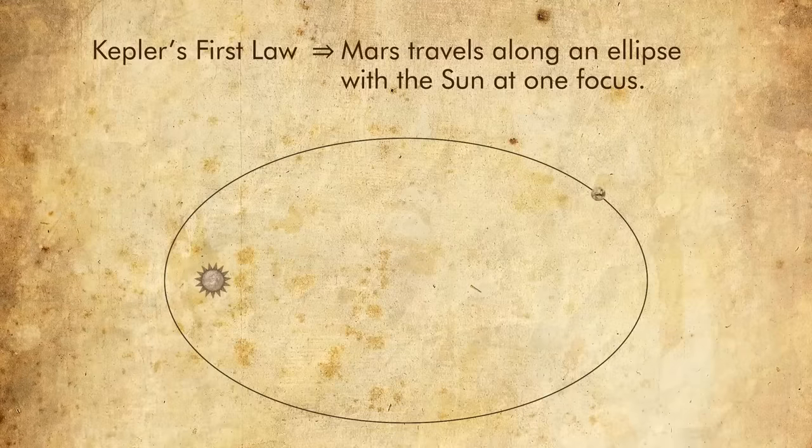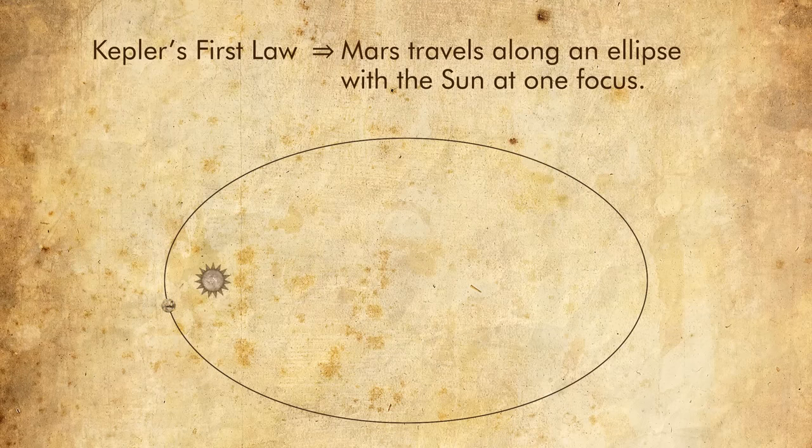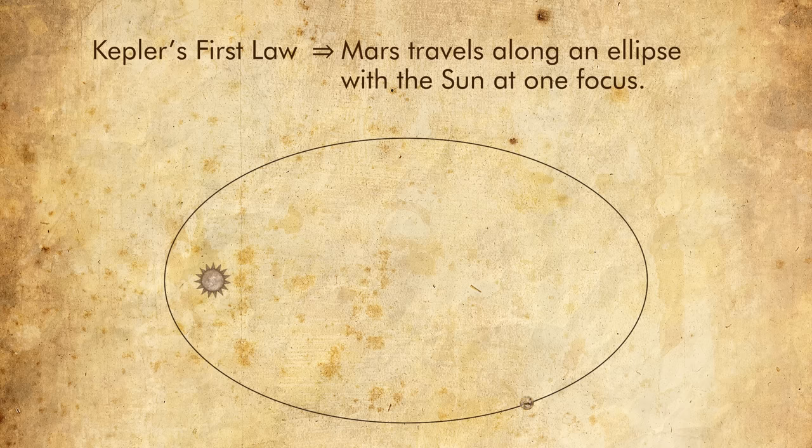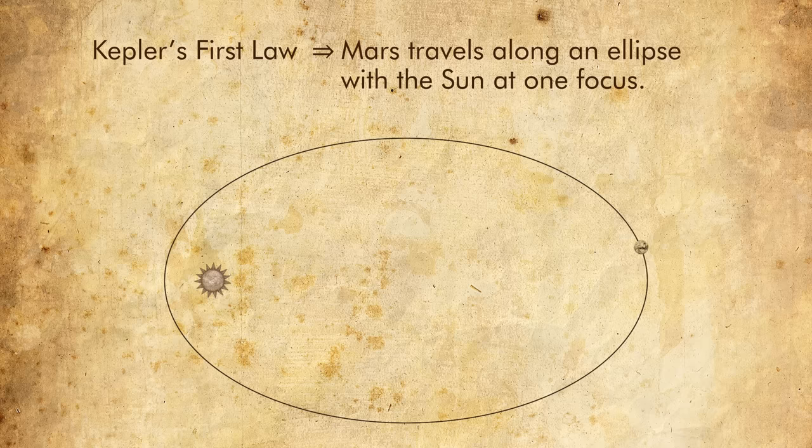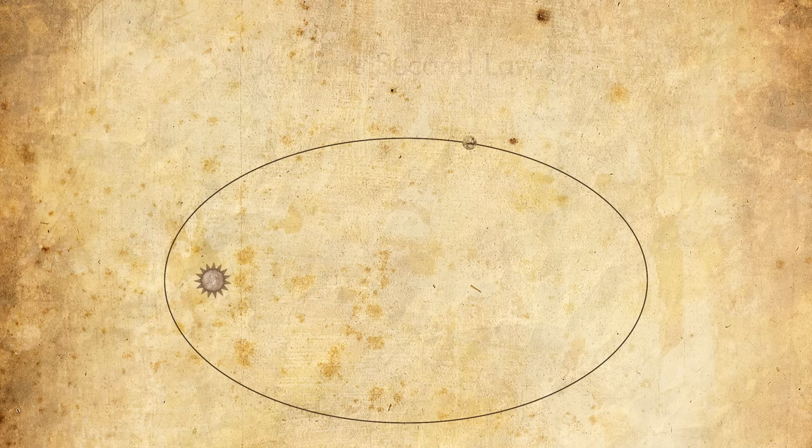Kepler's first law states simply that Mars travels in an elliptical orbit, with the Sun at one focus of the ellipse. Although he chose to list it first, Kepler only came to this conclusion after figuring out his second law.